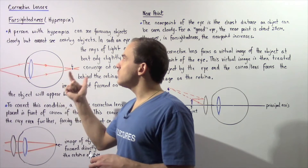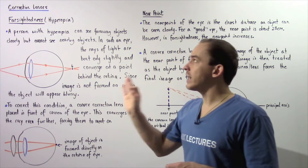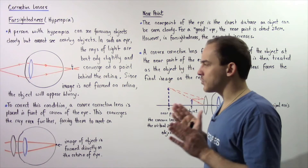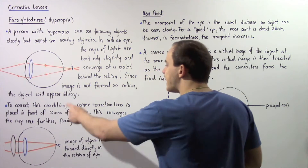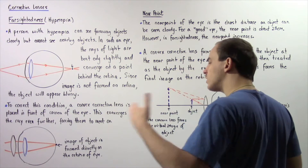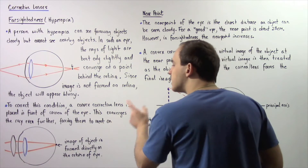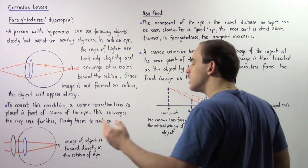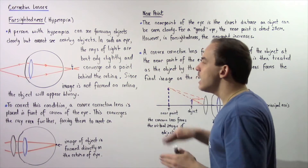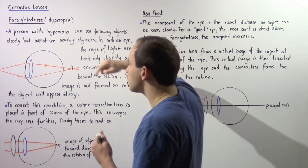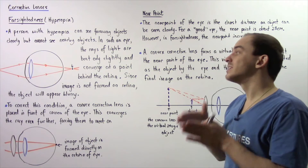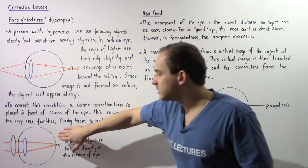We can use a convex corrective lens to solve this condition. A convex corrective lens is placed in front of the cornea of the eye. This converges the rays even further, increasing the amount of convergence of the light, forcing the rays of light to converge on the retina of the eye, which makes the image clear.